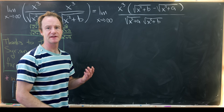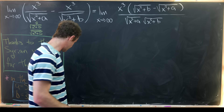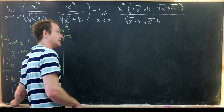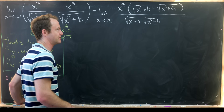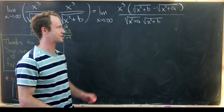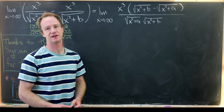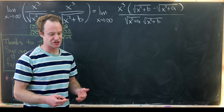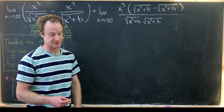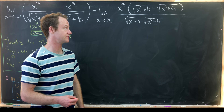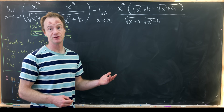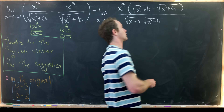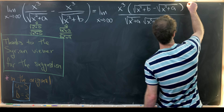Now we still have a little more simplification to do. We've got a difference of square roots in the numerator, and we'd like to eliminate that difference of square roots. We can do that by multiplying by the so-called radical conjugate.